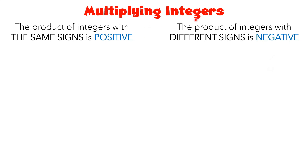Multiplying integers. We only have two rules in multiplying integers. First, the product of integers with the same sign is positive, while the product of integers with different signs is negative.